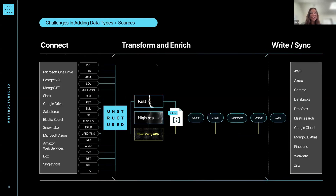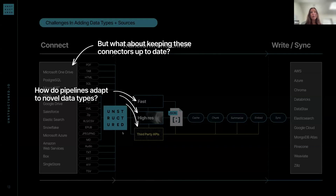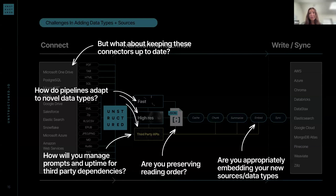When you put it all together — thinking about having a multimodal RAG with a lot of different sources and file types — there are a lot of different steps to the process. You have to think about keeping connectors up to date, adapting pipelines to novel data types, managing prompts and uptime for third-party dependencies, reading order, and considering re-indexing sources and data types. This really gets into orchestration beyond just simple data loaders.